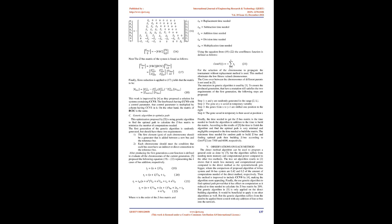The genetic algorithm optimization, proposed by reference 5, uses a genetic algorithm to find the optimal path to calculate the Z-bus matrix, minimizing the number of computations needed. The first generation is randomly generated but must satisfy two requirements: one, the first gene of each chromosome should be a generator added between a new bus and the reference bus; two, each chromosome must have an indirect or direct connection to the reference bus. After producing the first generation, a cost function is defined to evaluate all chromosomes. Reference 5 proposed equations representing the four cases of bus addition, and the tournament without replacement method is used for chromosome selection.